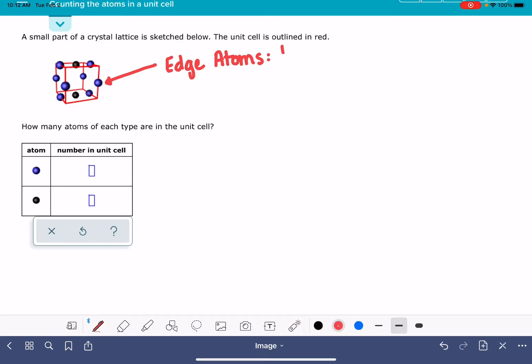So each edge atom has one-fourth of an atom inside the unit cell. All we have to do is figure out how many of these atoms we have that are sitting on the edges. In this diagram it looks like I have eight edge atoms. Each edge atom has one-fourth of its body inside the unit cell. So that gives me a total equivalent of two blue atoms inside that unit cell.